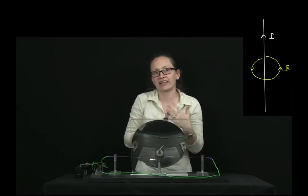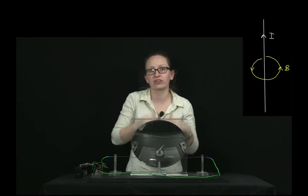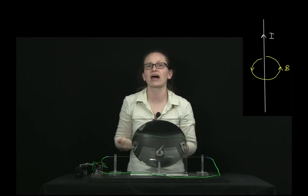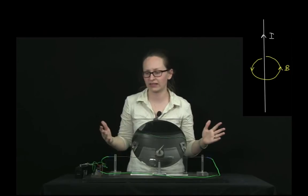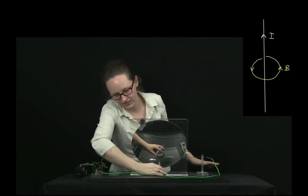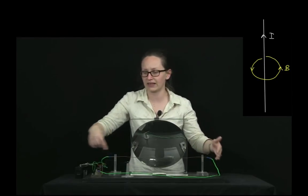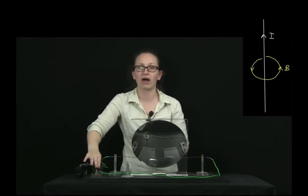Now we can actually calculate the strength of the magnetic field and it actually drops off as we increase our distance from the wire, which is what we would expect. If this compass was further away, we would expect it to sense less magnetic field from this wire here.